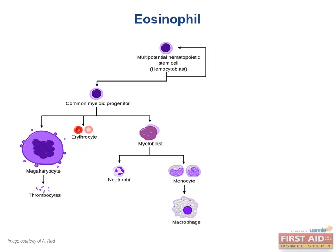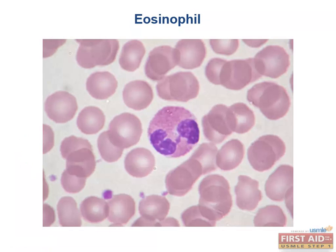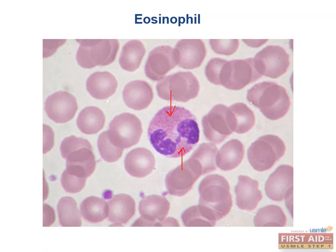Eosinophils are named for the roots eosin, which is a red acidic dye, and philic, meaning loving. Eosin-loving cells are the myeloid lineage granulocytic leukocytes. As you can see in this smear, the cytoplasm is replete with pinkish purplish granules. It is important to note that these granules do not obscure the nucleus, which is one way to distinguish them from the basophilic granules that we'll see next.